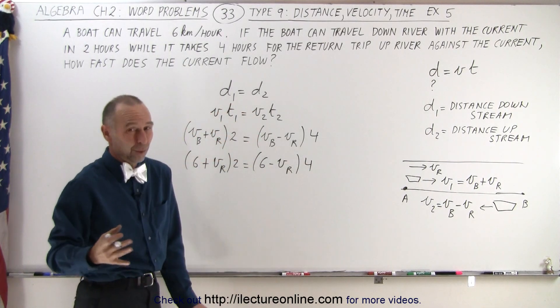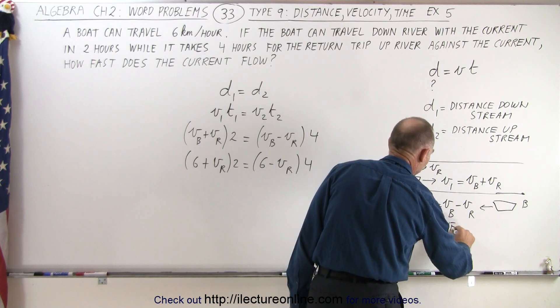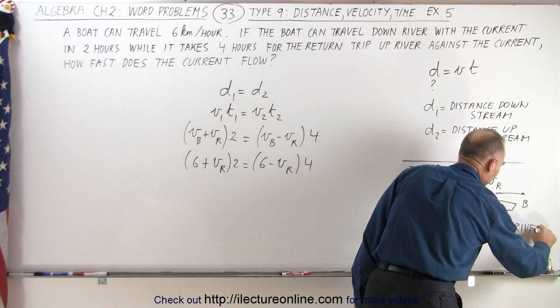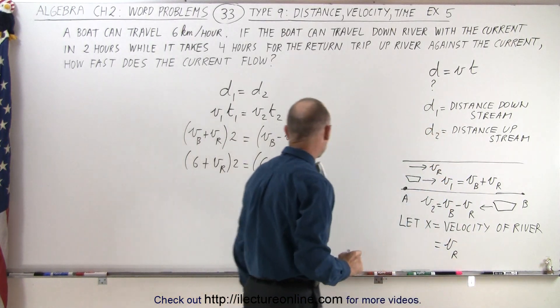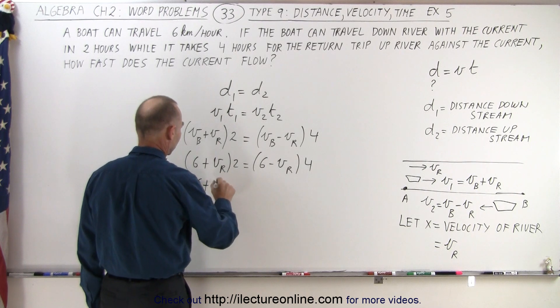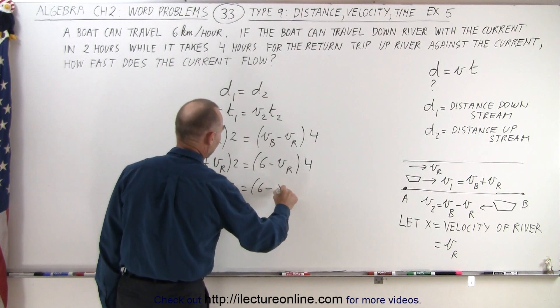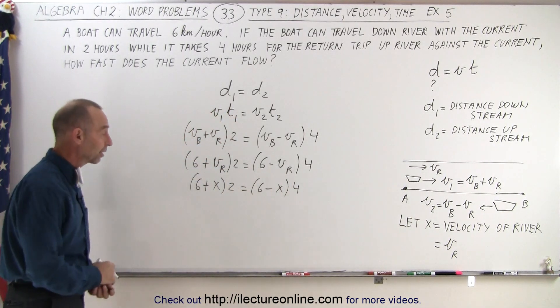And then if we just want to make things simple, let x equal the velocity of the river, which we denoted by v sub r. Then we just replace that by x and we can solve for x. So 6 plus x times 2 equals 6 minus x times 4, where x is the velocity of the river. That's what we're looking for.